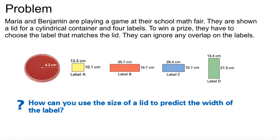Maria and Benjamin are playing a game at their school math fair. They are shown a lid for a cylindrical container and four labels. To win a prize, they have to choose a label that matches the lid. They can ignore any overlap on the label.